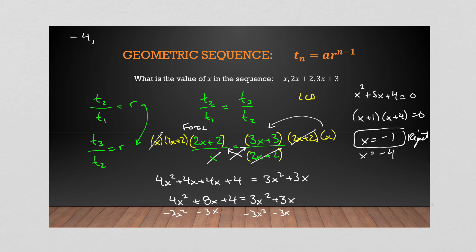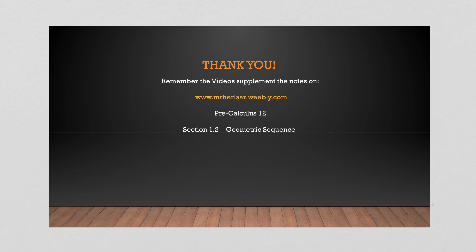Testing x = −4: the first term is −4, the second is −8 + 2 = −6, and the third is −12 + 3 = −9. Checking the ratio: −6 ÷ (−4) = 3/2 and −9 ÷ (−6) = 3/2. That's a valid common ratio of 3/2. So x = −4 is our answer. Both solutions work algebraically, but x = −1 produces a degenerate sequence, so we reject it. Always check your answers to see what kind of sequence you end up with.